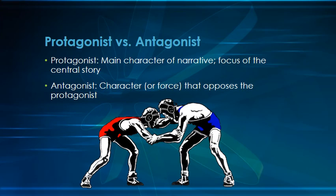When thinking about the major characters in a story, we want to think about the protagonist and the antagonist. The protagonist is the main character of the narrative — the focus of the central story and the character that we're largely identifying with. The antagonist is the character or force that opposes the protagonist, the person they're struggling with. It's important to note that this is not the same as good versus evil. If the story is about a kid who wants to borrow his parents' car but his dad won't let him, the dad is the antagonist — the person the character is struggling against — even though he's not evil or a villain.